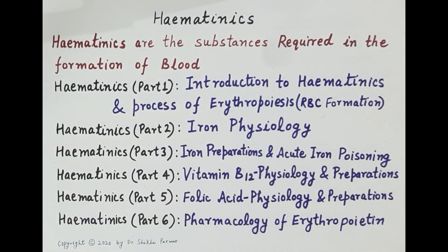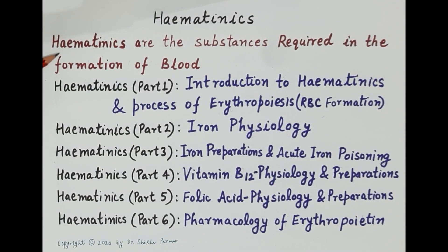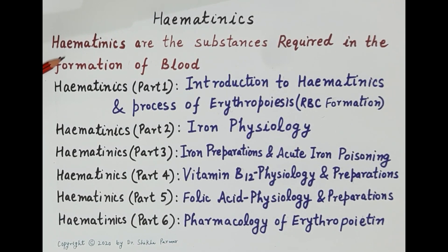Hello students. The topic we are going to discuss is hematinics. Hematinics are the substances required in the formation of blood. The most important substances required in the formation of blood are iron, vitamin B12, folic acid, and erythropoietin.